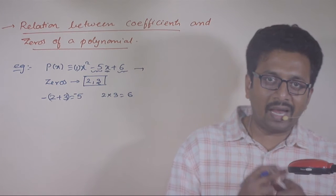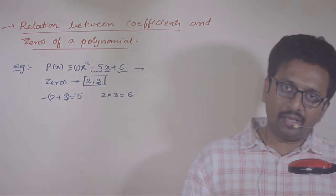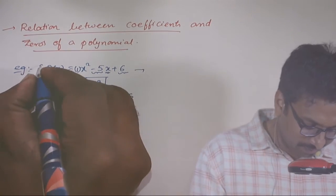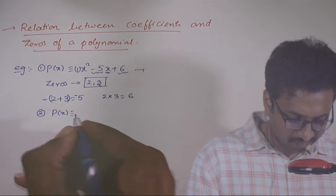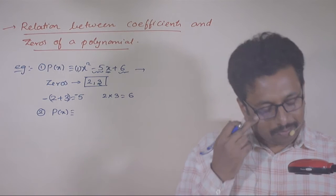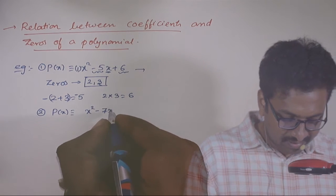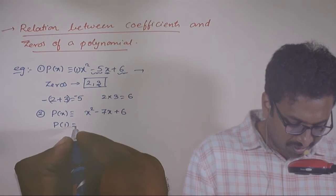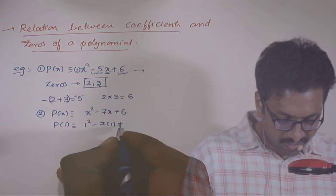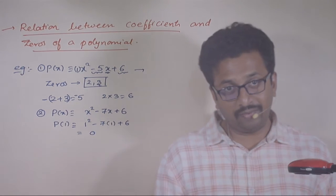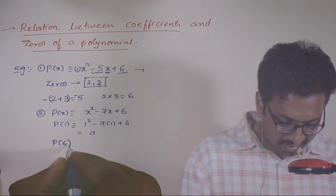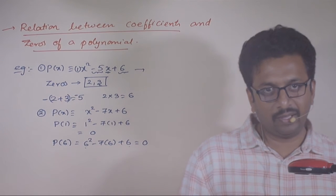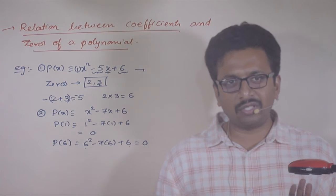If we have to look at x, the coefficient of x is 1, and we look at the constant term. For example, x square minus 7x plus 6. P of 1 is 1 square minus 7 into 1 plus 6, which equals 0. That means 1 is a zero of this polynomial. And P of 6 is 6 square minus 7 into 6 plus 6, which gives 36 plus 6 is 42 minus 42 is 0.